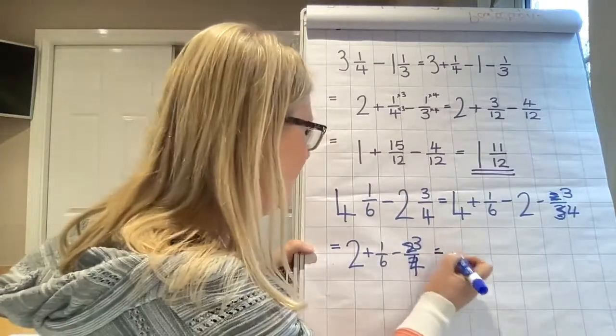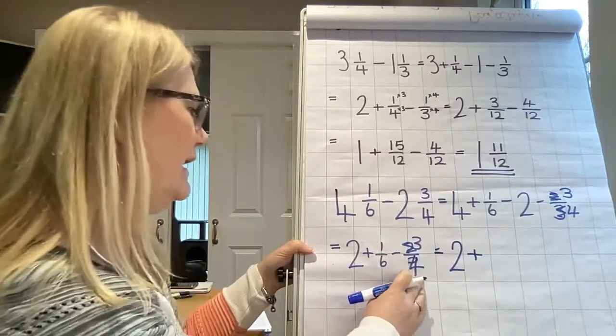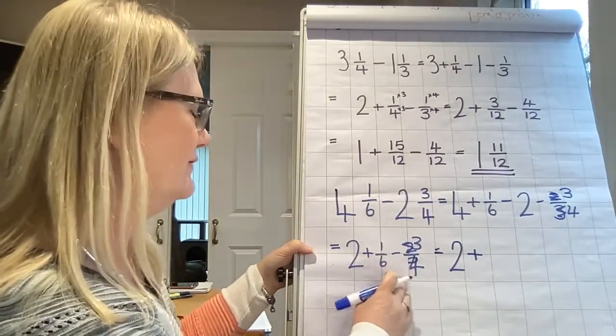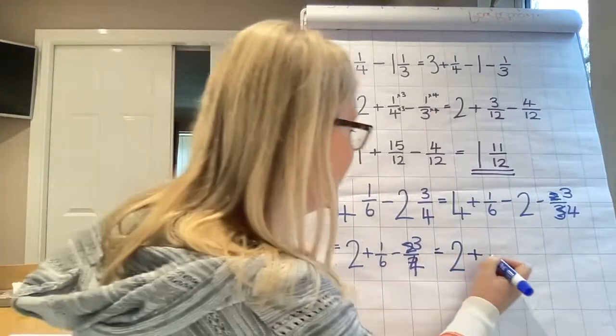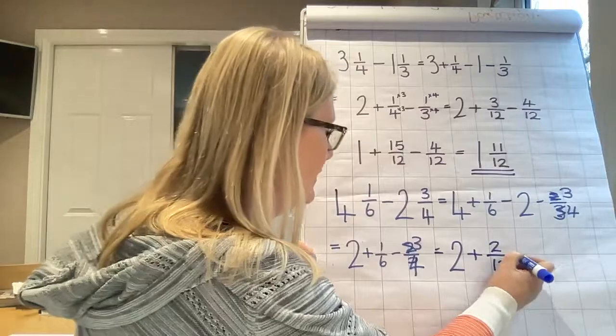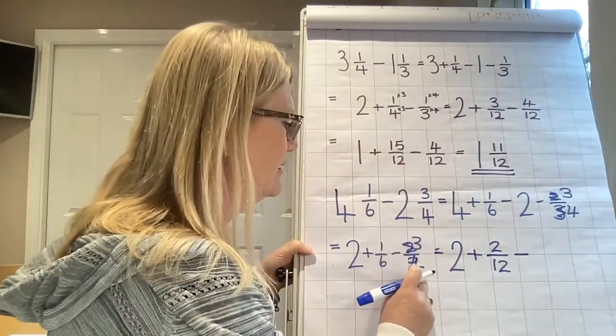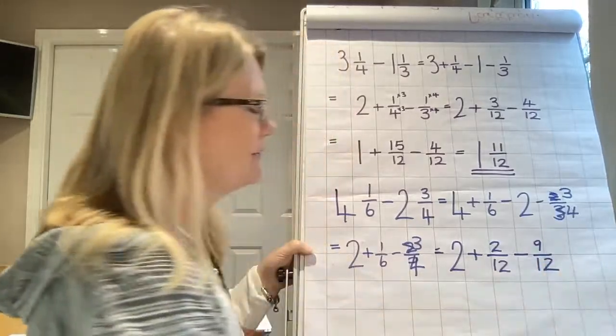So, now I'm going to find my common denominator. Two plus, right, okay, so six isn't a multiple of four. Twelve is, so I'm going to use twelfths. And one sixth is two twelfths. And three quarters is nine twelfths.